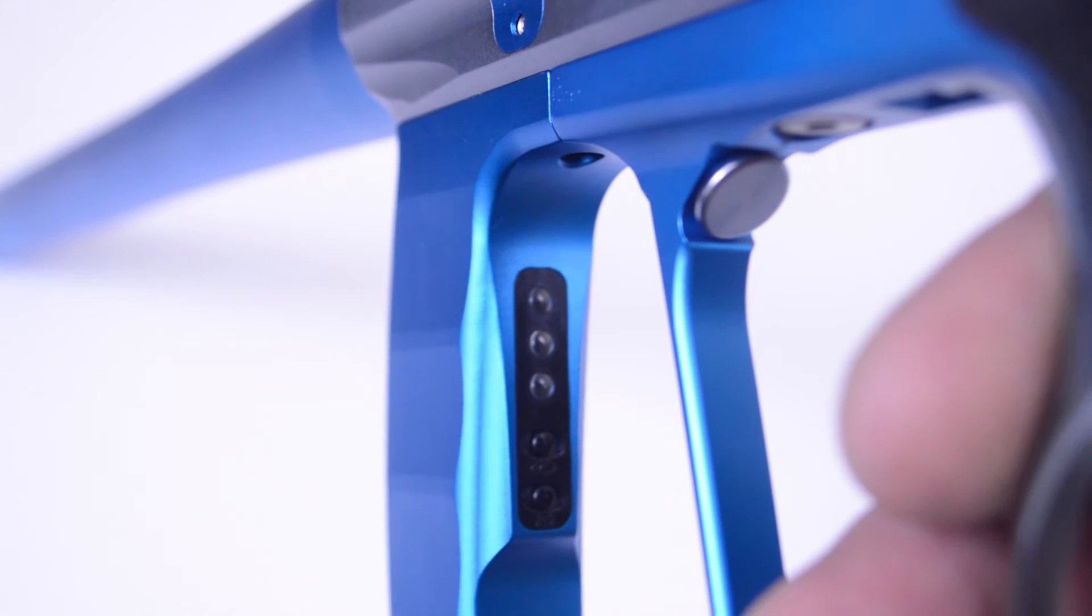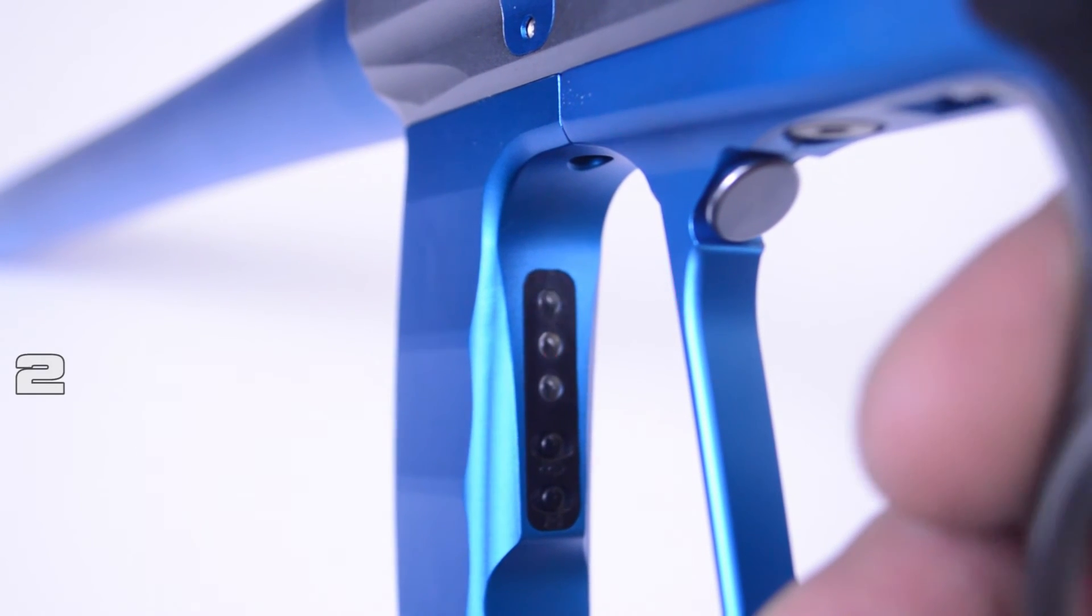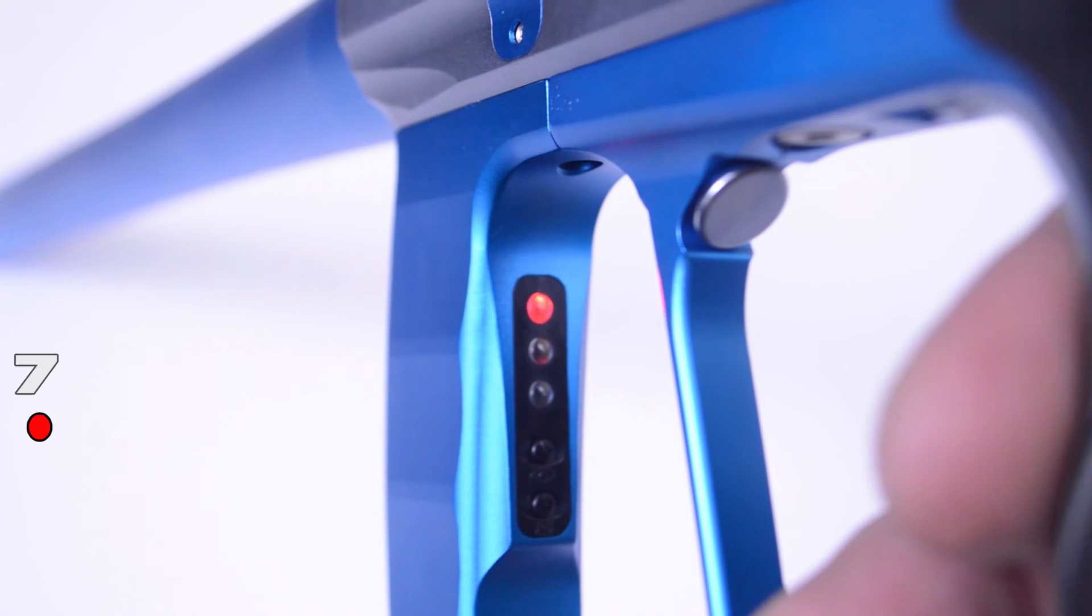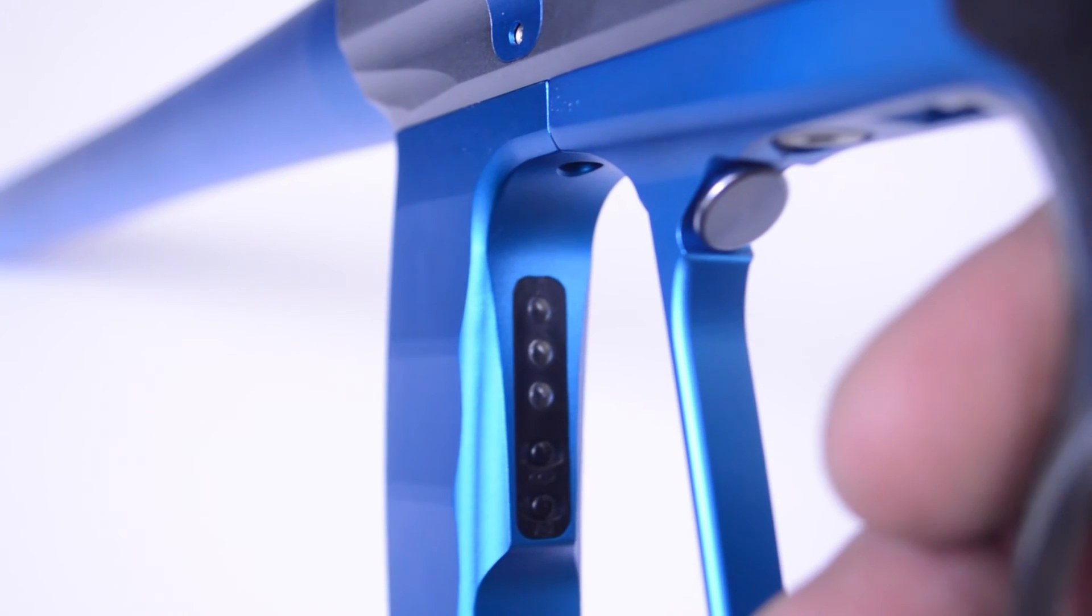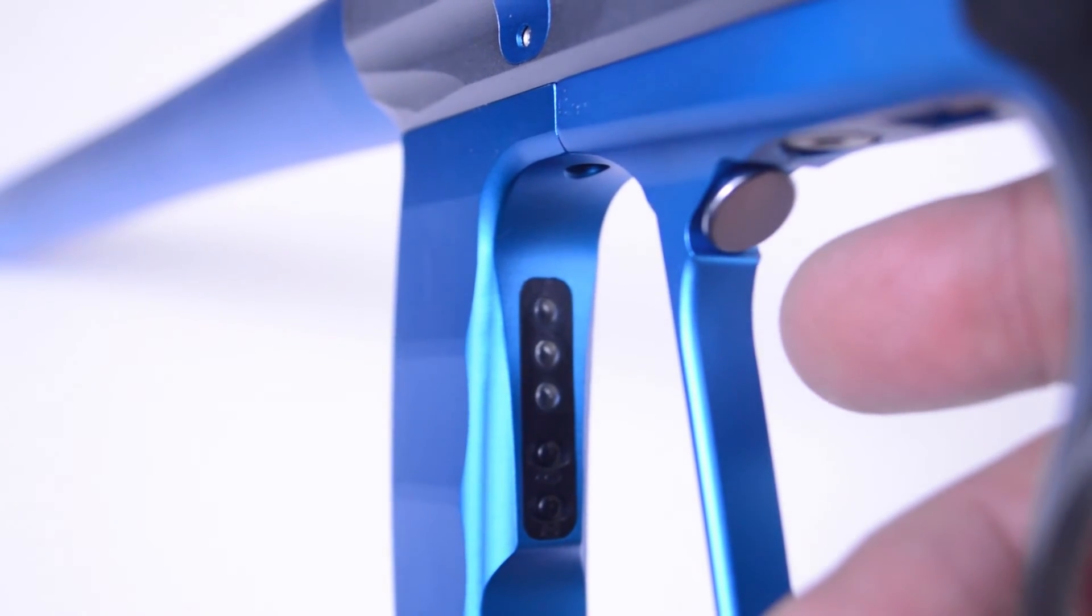When the LED goes dark, press and release the trigger the number of times you want your new setting to be. I'm headed to a field with a 12 ball per second cap so I will pull the trigger 12 times here and then stop.